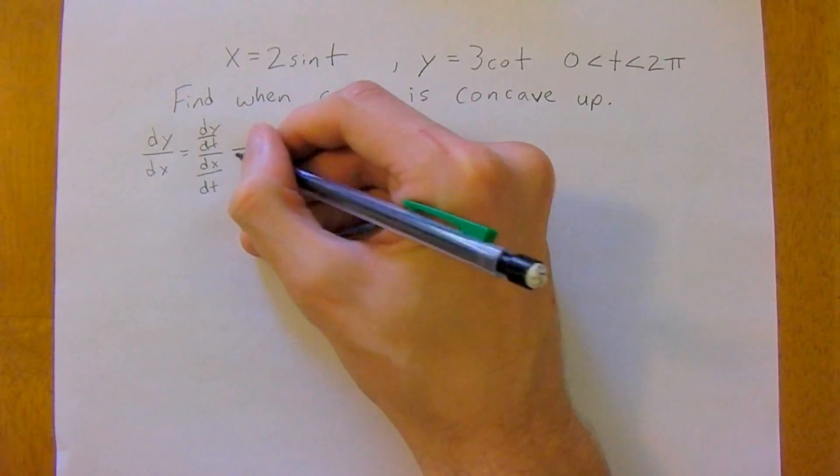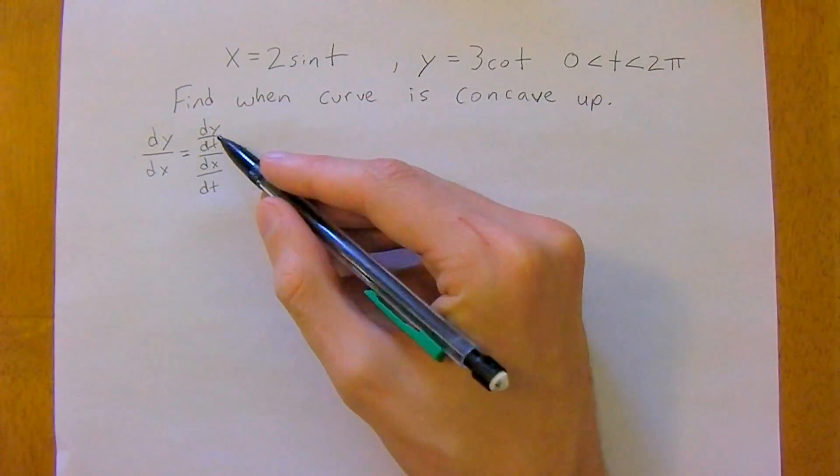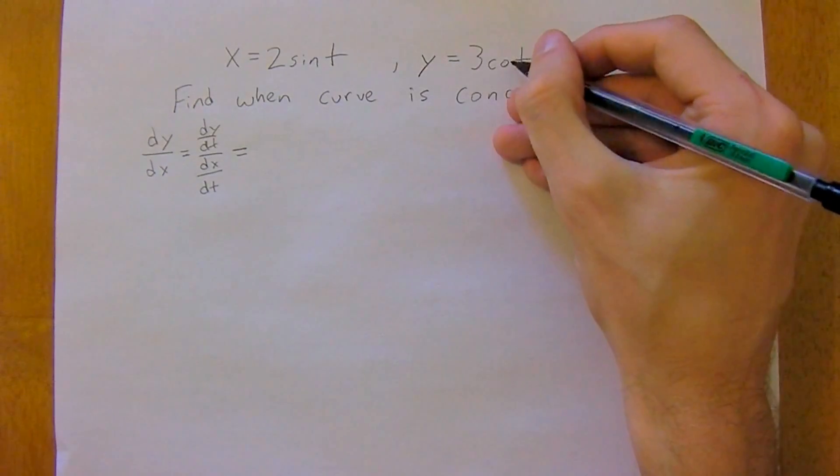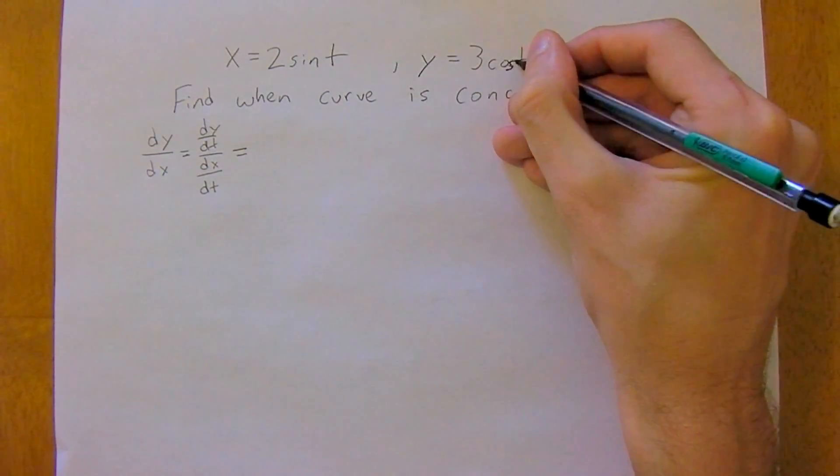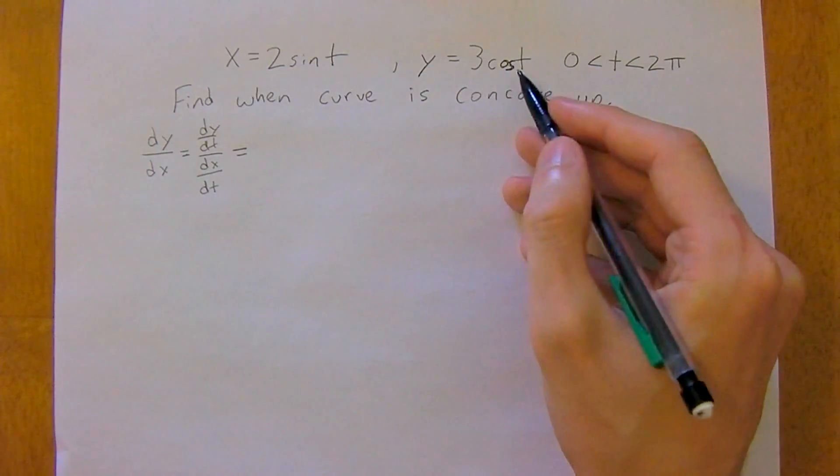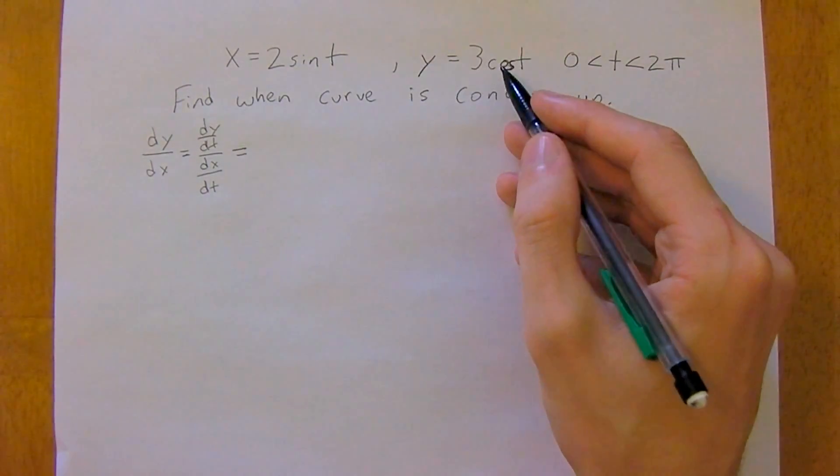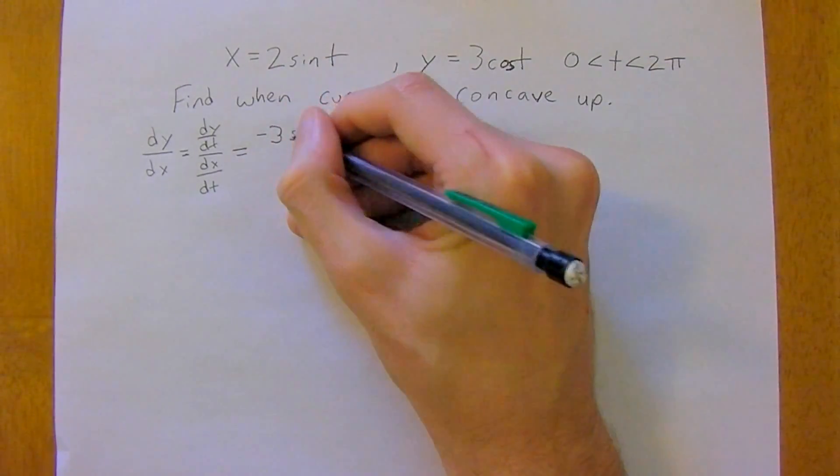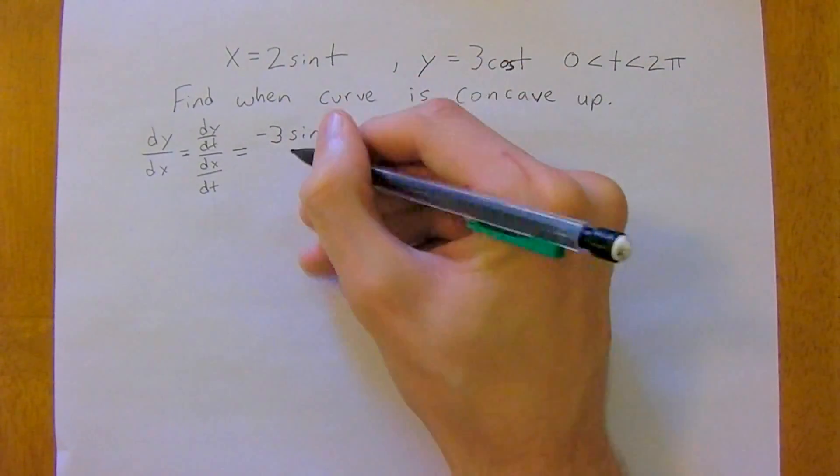And so the derivative of y with respect to t, the derivative of y with respect to t, well the derivative of cosine is negative sine, so we're going to have negative 3 sine t.